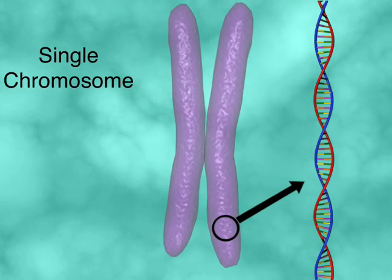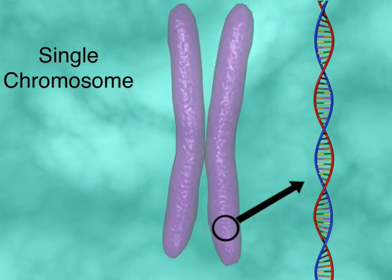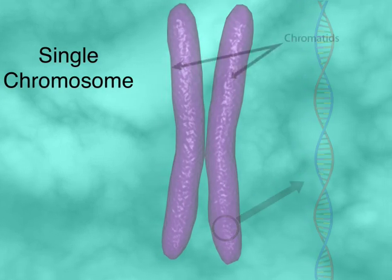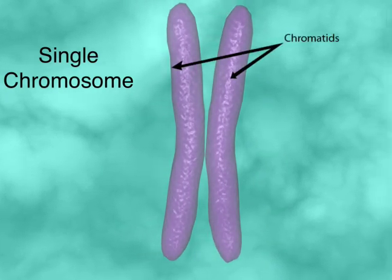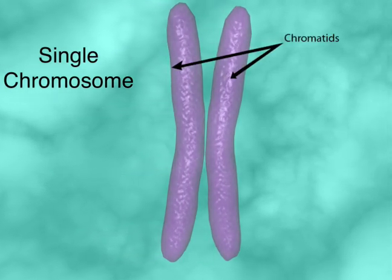Chromosomes are made up of highly packaged double helix DNA and need a way to connect to the microtubules, as these tubes will ultimately pull them to the two separate poles.